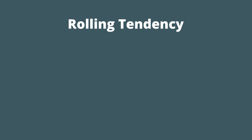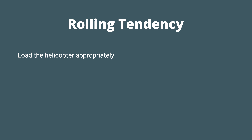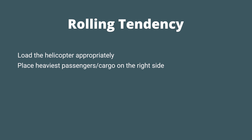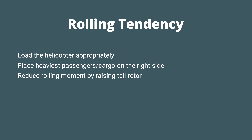A couple of things can be done to offset the rolling tendency. The first one being loading the helicopter in a way which balances out the aircraft — load the heaviest passengers and cargo on the right side of the helicopter to avoid a left low skid. The manufacturer can also reduce the rolling tendency by raising the tail rotor to the level of the main rotor, or they can offset the mass to the left.